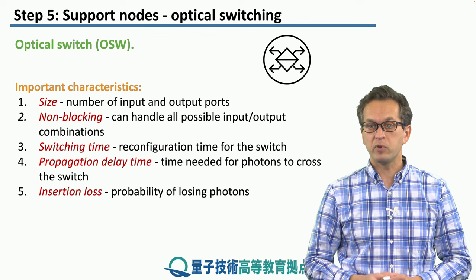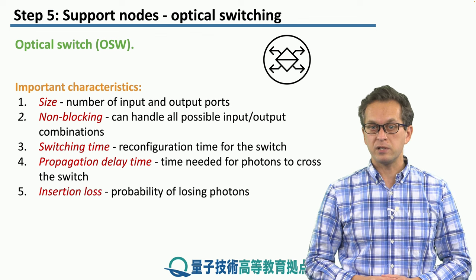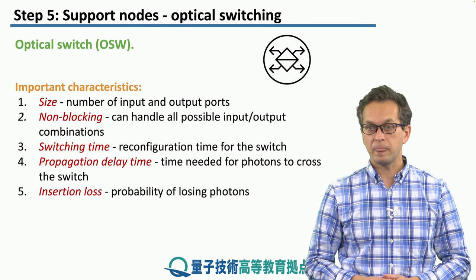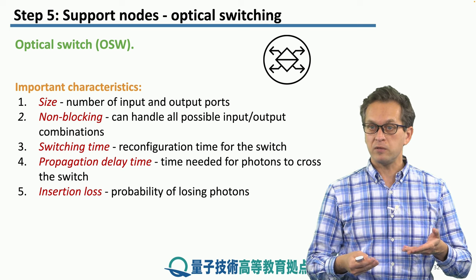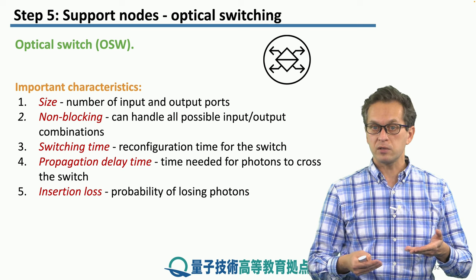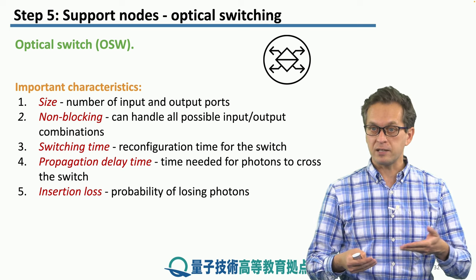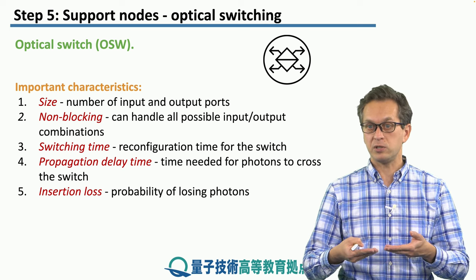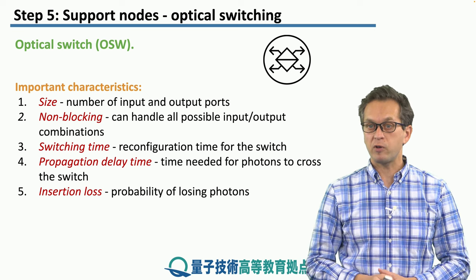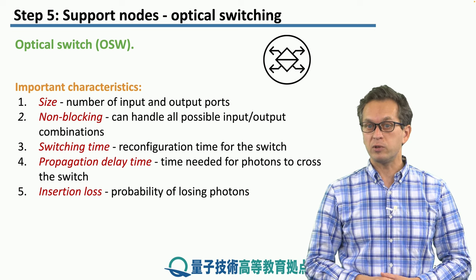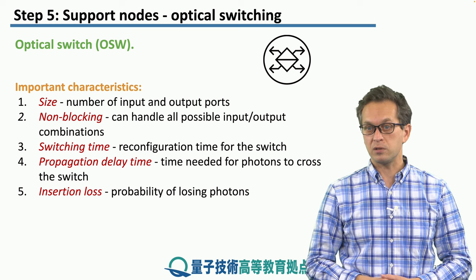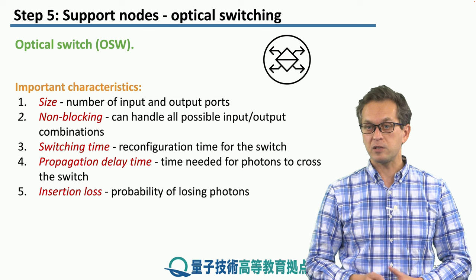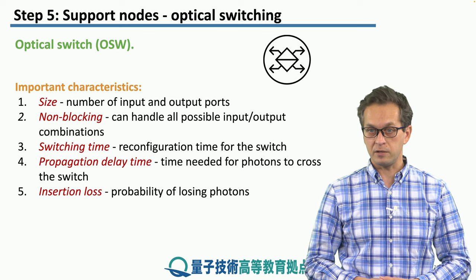A very important characteristic is the insertion loss. We're talking about coupling individual photons traveling inside the fiber into this optical switch. At the interface there is some probability that we're going to lose some photons. This is quantified by the insertion loss.